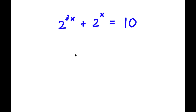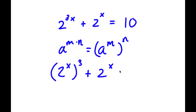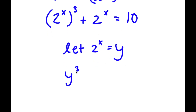In this problem, I have 2 to the power of 3x plus 2 to the power of x is equal to 10. To solve this, if I have something in the form a to the power of m times n, this is the same thing as a to the power of m to the power of n. So 2 to the power of 3x can be rewritten as 2 to the power of x to the power of 3. So I have that plus 2 to the power of x is equal to 10. Now I'm going to let 2 to the power of x equal the variable y, so I have y to the power of 3 plus y is equal to 10.